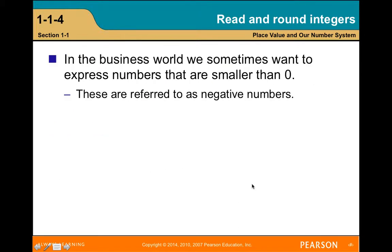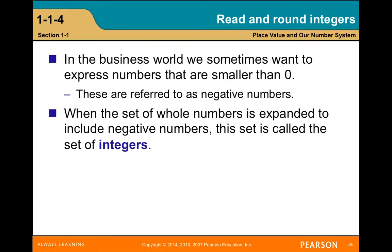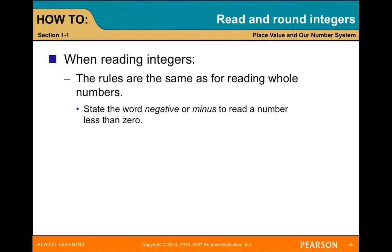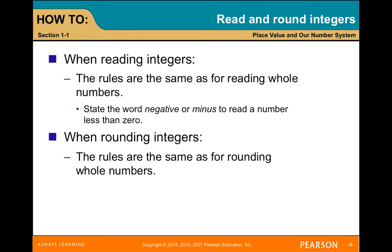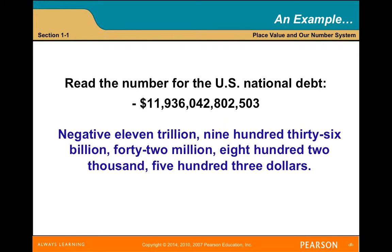In the business world we sometimes want to express numbers smaller than zero — these are negative numbers. When a set of whole numbers is expanded to include negative numbers, the set is called the set of integers. When reading integers, the rules are the same as for whole numbers — just state the word 'negative' or 'minus' to indicate a number less than zero. Rounding rules are also the same as for whole numbers.